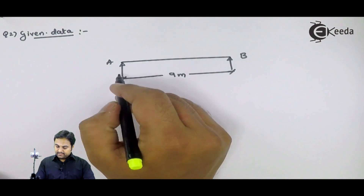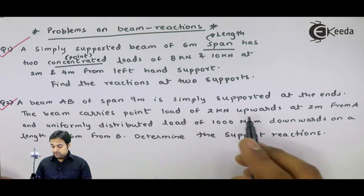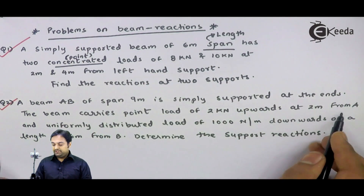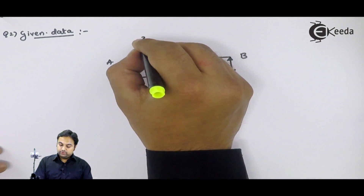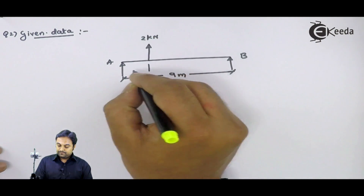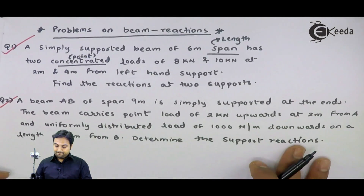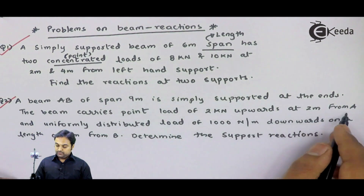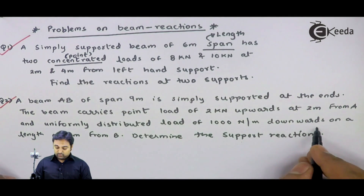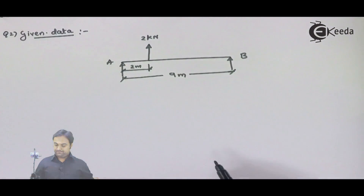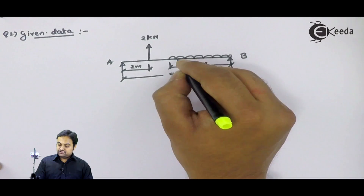The length is 9 meters and it is simply supported between the two supports A and B. The beam carries a point load of 2 kilonewton upwards at 2 meters from A. At 2 meters from A, there is a 2 kilonewton load acting upward. The beam also carries a uniformly distributed load of 1000 newton per meter downwards on a length of 6 meters from B.